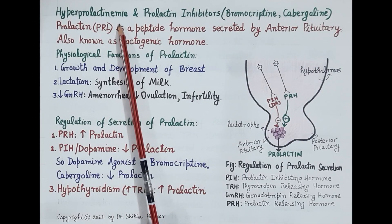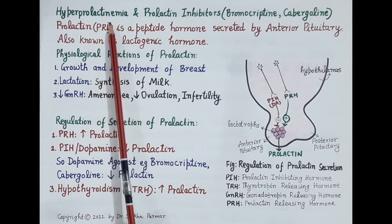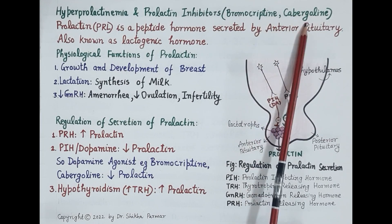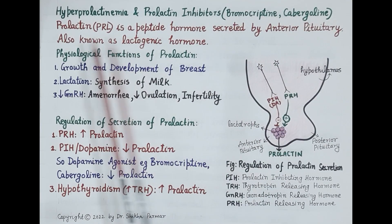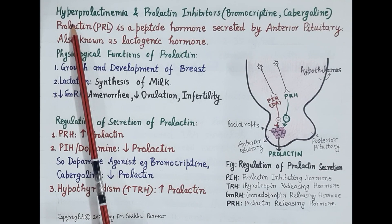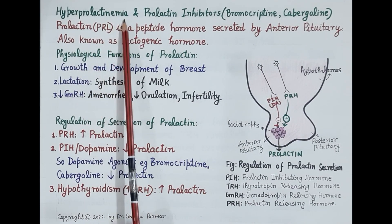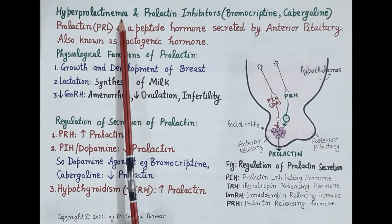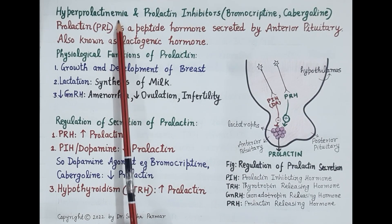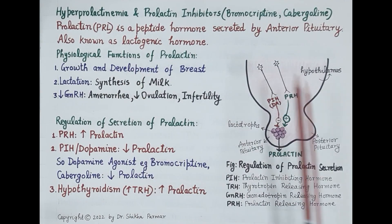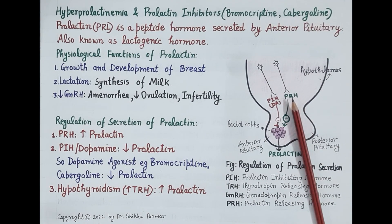Hello students. In today's video we are going to study hyperprolactinemia and its treatment with prolactin inhibitors, namely bromocriptine and cabergoline. As the name suggests, hyper means raised or elevated, and emia refers to blood levels. So hyperprolactinemia is a condition where the levels of prolactin rise in the blood. In order to understand symptoms and treatment, let's quickly revise physiological functions and regulation of secretion of prolactin.